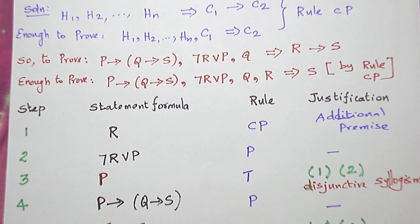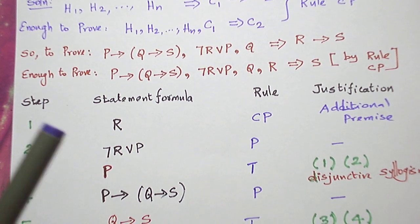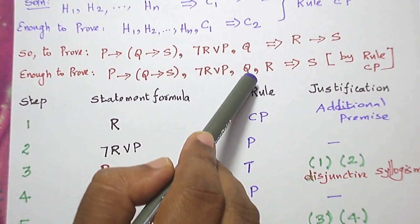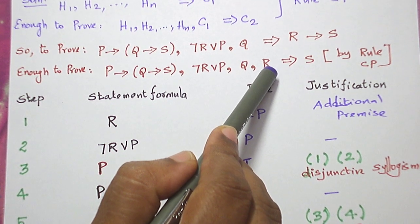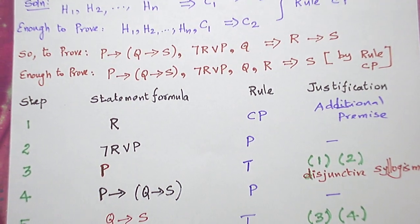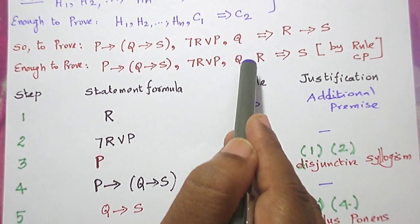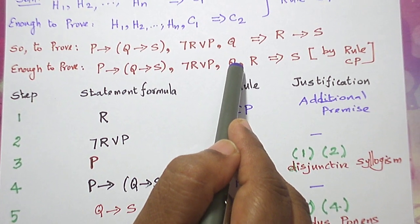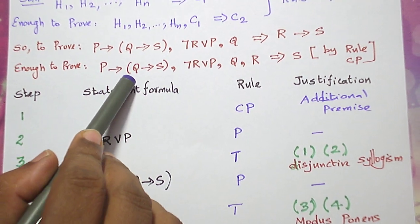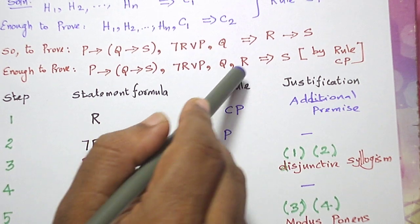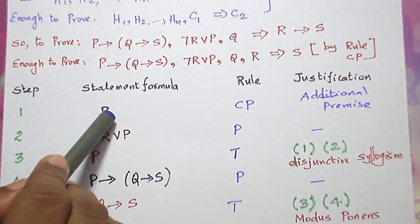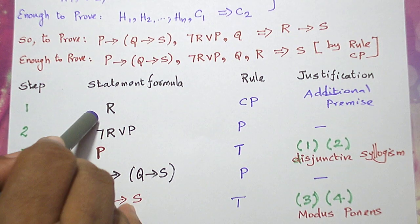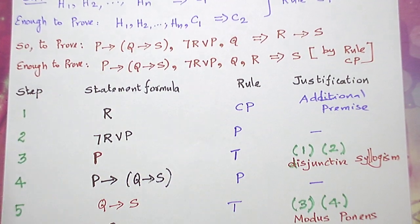For step one, I take the simplest premise without any connective if possible. The first premise has a connective — leave it. The second has a connective — leave it. Q and R are simple. I start the proof with R rather than Q, because the statement formula involving Q is more complicated. So R is taken as the additional premise, guaranteed by rule CP.